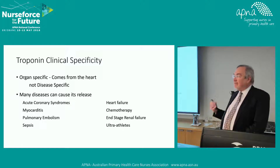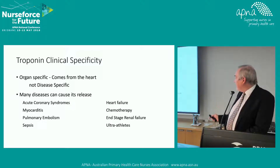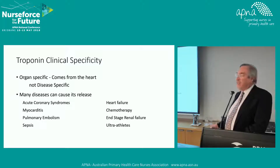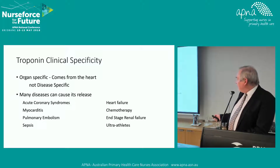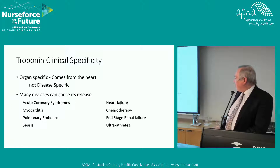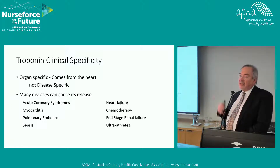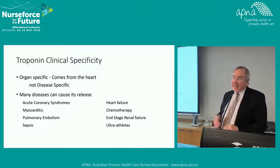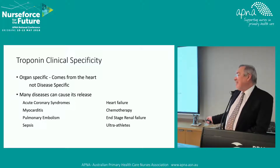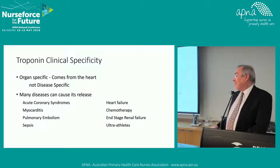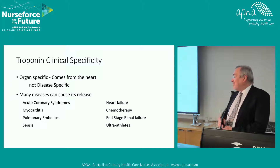Any type of heart failure can strain the heart and cause troponin release. Some chemotherapies knock the heart around a little bit and you can find increased troponin shortly after chemotherapy. People with renal failure may have elevated troponin due to accumulation of toxins, haemodynamic effects, or dialysis. At end-stage renal failure you can see troponin levels elevated. Ultra-athletes — people doing 100-kilometre runs or really extreme events — can also have troponin released.